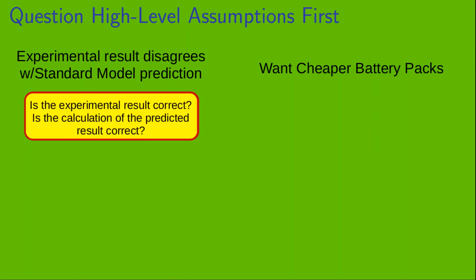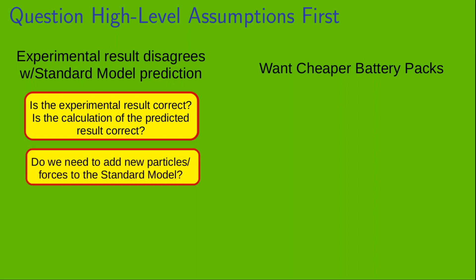Two of the first questions that we would ask in this case are the following. One, is the experimental result correct? And two, is the calculation of the predicted result correct? If we're convinced that both of those are correct, then a next question that we might ask is the following. Do we need to add new particles or forces to the standard model of particle physics? So, that's the type of high-level assumption that we would want to question first.